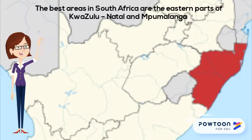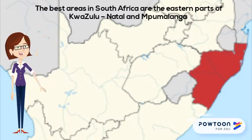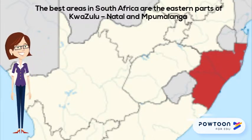Sugarcane will only grow in a hot wet climate. The best areas in South Africa are the eastern parts of KwaZulu-Natal and Mpumalanga.